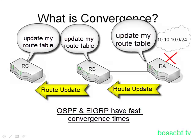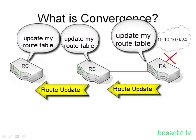So that is what convergence is all about — getting the information out there, updating everybody as soon as possible, and getting the network stabilized and functioning as quickly as possible when a change occurs. There are fast convergence protocols like OSPF and EIGRP, and then there are slower ones like RIP. That is route convergence. Thanks for watching.